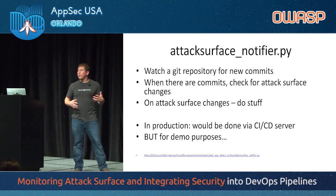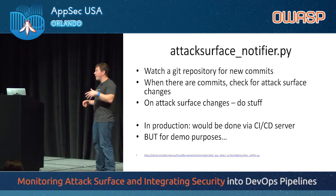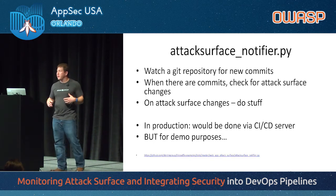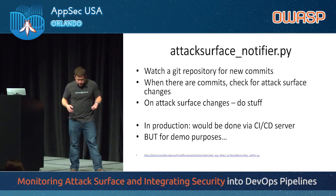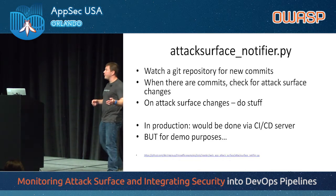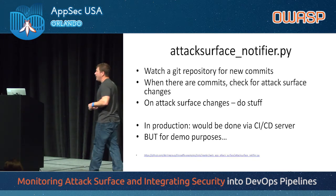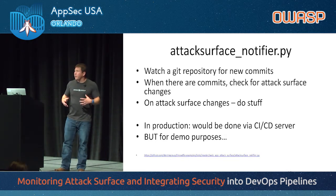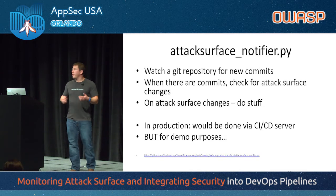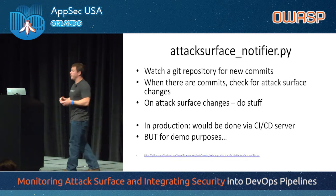The attack surface notifier watches the Git repository for new commits. When there are commits, it checks to see if new attack surface has been included in the application. On an attack surface change, it triggers actions. In a production environment, this would be a Jenkins plugin or your CI/CD server — we've done some of that for certain environments. For demo purposes, this is basically just a loop that busy-waits and checks a Git repo, watching what has changed and based on those changes triggering different activities or behaviors.